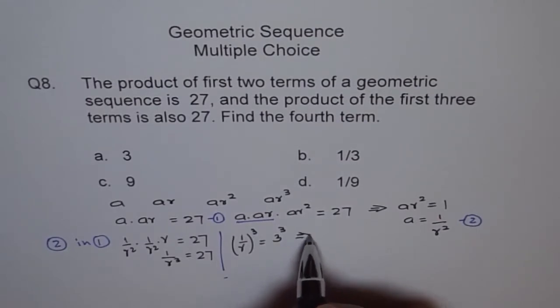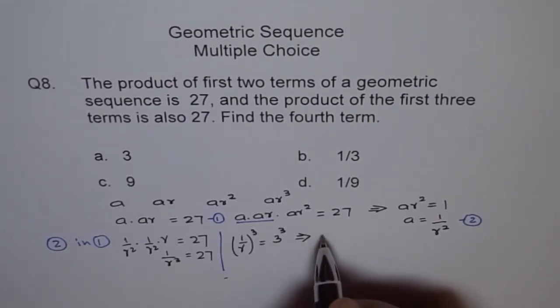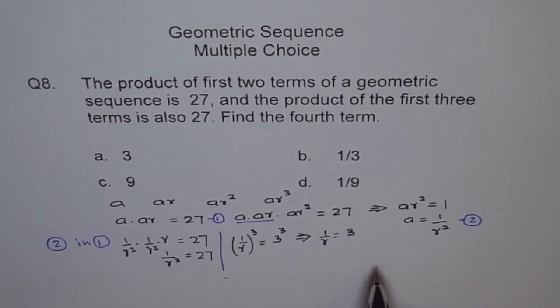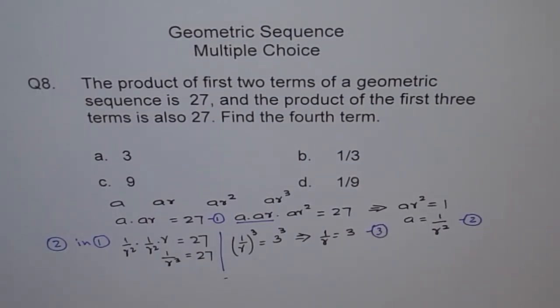So this means what? This means 1 over r equals 3. So 1 over r equals 3. Now if I know that 1 over r is 3, let me call this equation 3 itself.